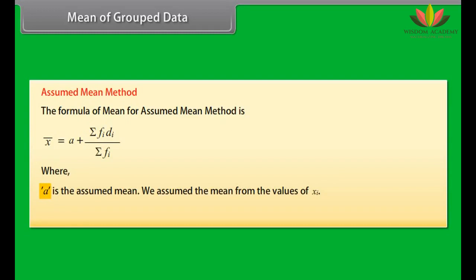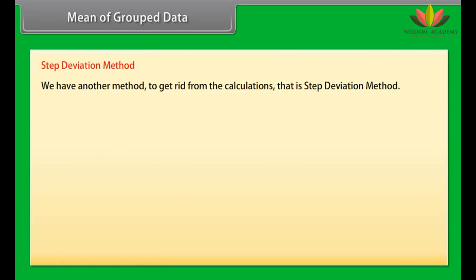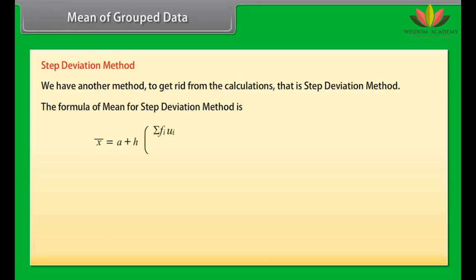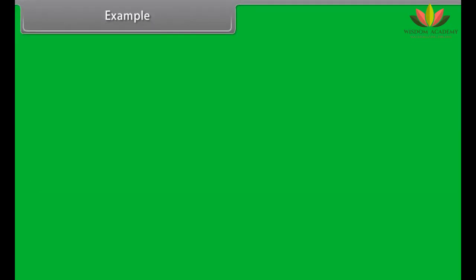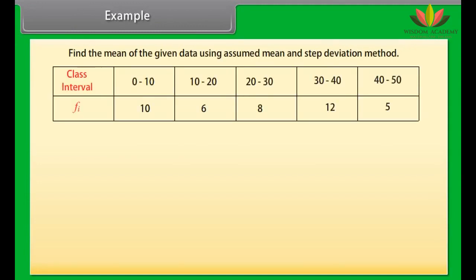We have another method to avoid heavy calculations — the step deviation method. The formula for mean using step deviation method is: x-bar equals assumed mean (a) plus h multiplied by summation of fi·ui divided by summation of fi, where a is the assumed mean, h is the class size, and ui equals (xi minus a) divided by h.